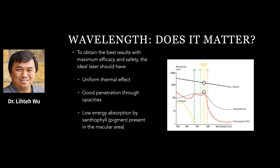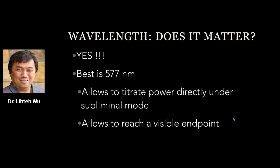Looking at the absorption curves from the laser, the target is the melanin, with a second peak in the hemoglobin. With the yellow 577nm laser, we get very good absorption with melanin as well as the highest peak in oxyhemoglobin, while completely avoiding the xanthophyll pigment — which is a problem with 532nm lasers. Conversely, infrared lasers give lower absorption on melanin and even lower on oxyhemoglobin. So does wavelength matter? Absolutely, and the best is 577nm.